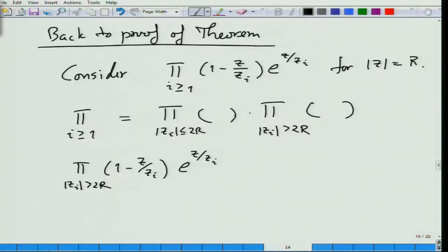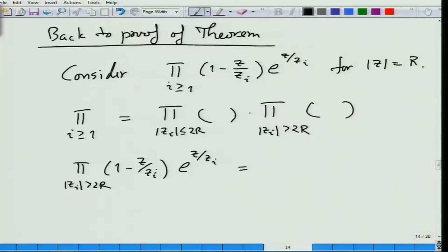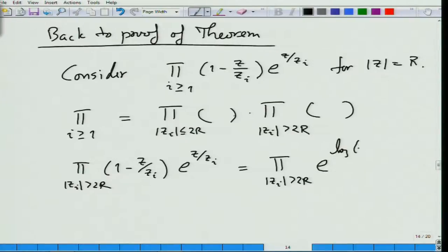For the part with |z_i| > 2R: since |z/z_i| < 1/2 always for all such i, I can write each factor as e^(log(1 - z/z_i) + z/z_i). All I have done is written this as e^(log(...)). Here log appears, so we must be careful — but since z/z_i moves in a disk of radius 1/2 around 0, the quantity 1 - z/z_i stays in a disk of radius 1/2 centered at 1, so log is completely analytic there with 0 far away.